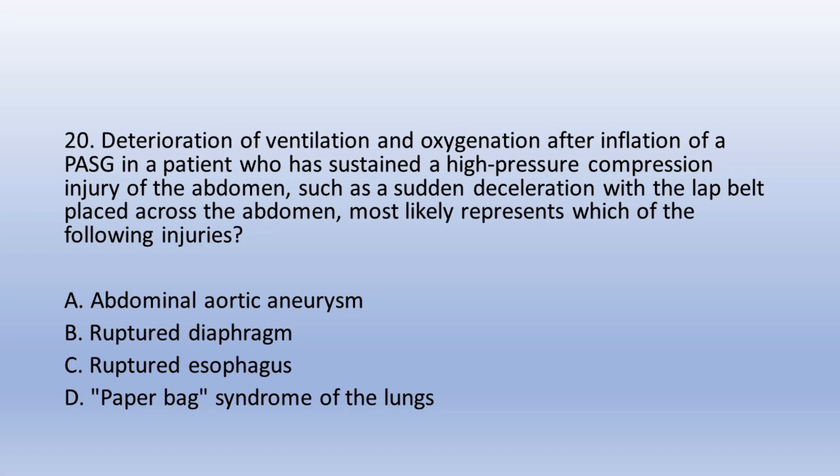Question 20. A deterioration of ventilation and oxygenation after inflation of a PASG in a patient who has sustained a high-pressure compression injury of the abdomen, such as sudden deceleration with the lap belt placed across the abdomen, most likely represents which injury? A. Abdominal aortic aneurysm, B. Ruptured diaphragm, C. Ruptured esophagus, D. Paper bag syndrome of the lungs. The answer is B. Ruptured diaphragm.